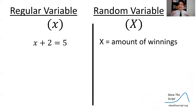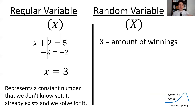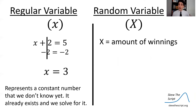Let's talk about the difference between this random variable and a regular variable in algebra. A regular variable represents a constant number that is real but unknown, and we solve for it using algebra. A random variable, notated by a capital letter X, represents an outcome that hasn't occurred yet, and there are probabilities associated with its different outcomes that we can explore.